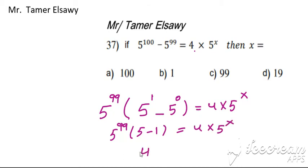5 minus 1 is 4, multiply 5 power of 99 equals 4 multiply 5 power of x. 5 power of 99, cancel 4, divide by 4, and the base is equal - 5 equals 5, then x equals 99.